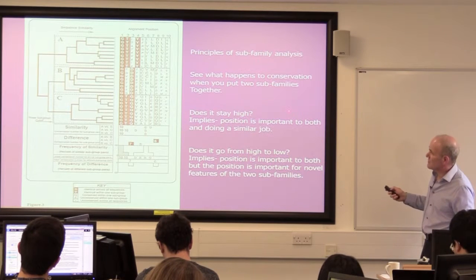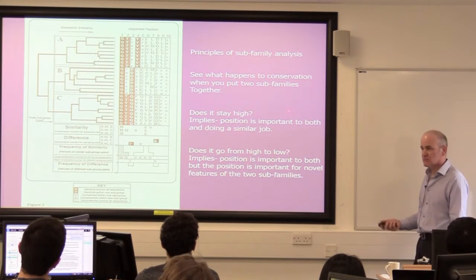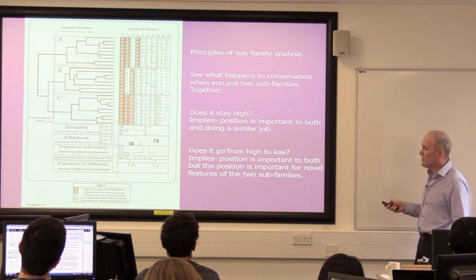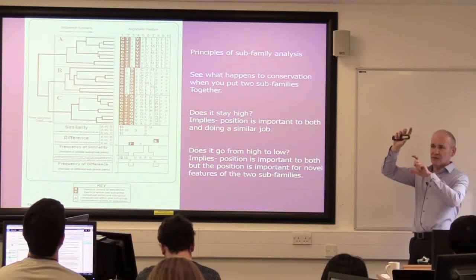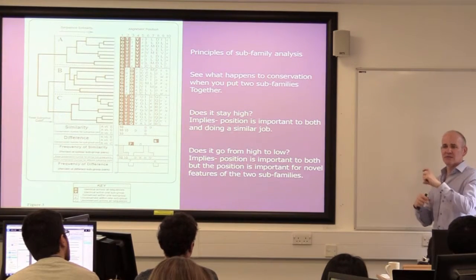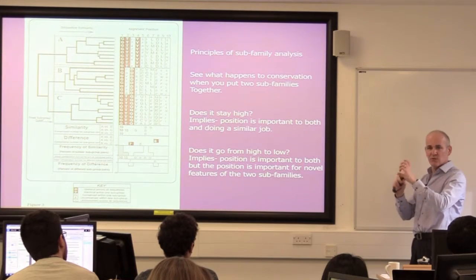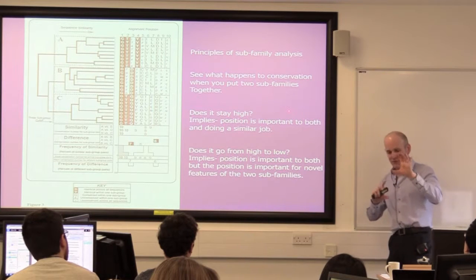The principles are: what happens to conservation when you put two subfamilies together? Does it stay high? That implies the position is important to both and doing a similar job - it's hydrophobic in both and staying conserved. Does it go from high to low? That could mean it's important to both, but the position is important for novel features - highly conserved in both subgroups, but when you put them together conservation goes down. That means it's doing something about specificity - it could affect binding or other properties of those two subgroups.